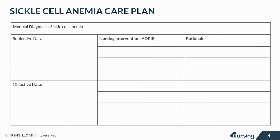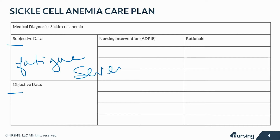Let's take a look at some of the subjective and objective data that your patient with sickle cell may present with. Subjective data are things based on your patient's opinions or feelings. For sickle cell, your patient might express fatigue, a pain crisis meaning severe pain all over the body, shortness of breath, chest pain, and irritability.